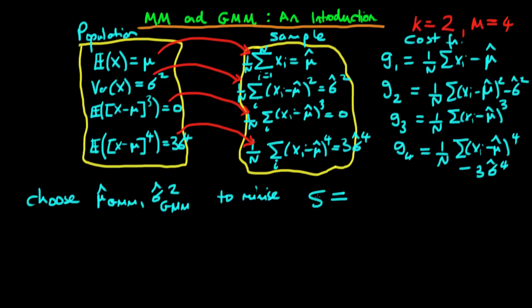So what we could do is we could minimize something which I'm going to call S here, which is the sum from j equals 1 to 4 of the individual values of the cost functions all squared. So this would be a sort of least squares choice of mu hat GMM and sigma hat squared GMM, and that might be okay.